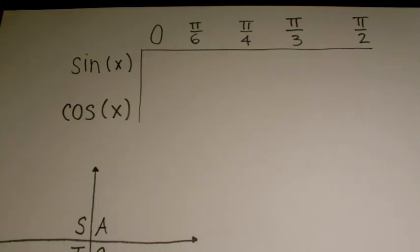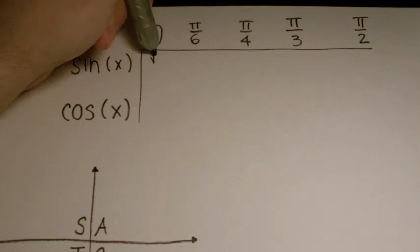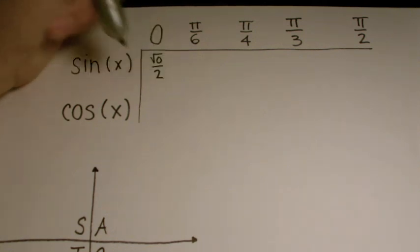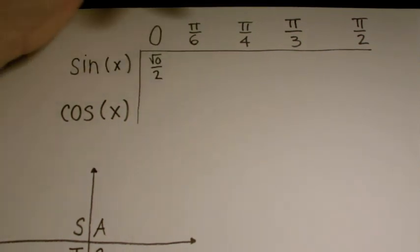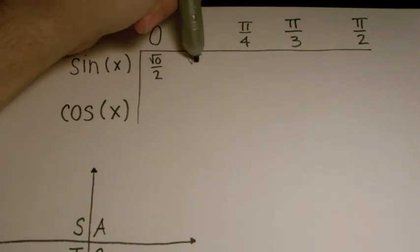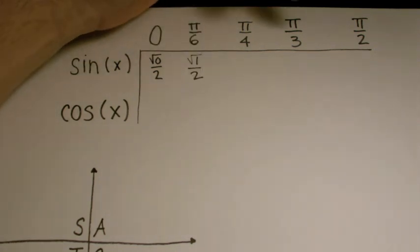So here's a quick way to memorize it. The sine of 0, I'm going to write that as √0 divided by 2. The sine of π/6, I'm going to write that as √1 over 2. Maybe you already see the pattern.